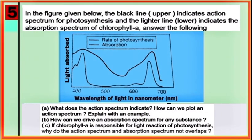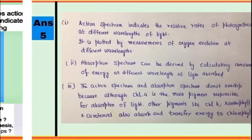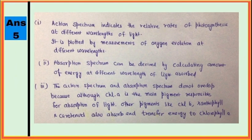Question number five is again based on the graph showing action spectrum and absorption spectrum of chlorophyll A. It has three parts A, B, and C, and these are the answers of all three parts.